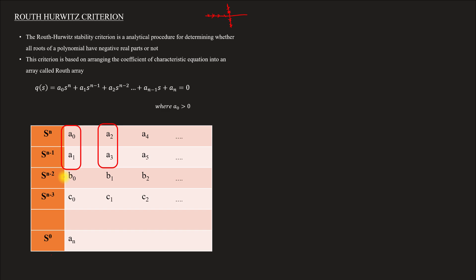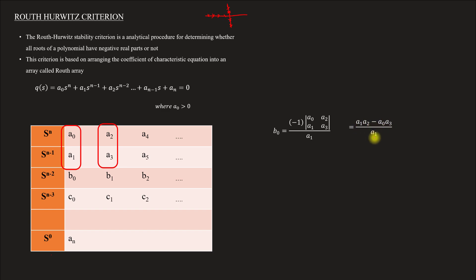The expression for finding B0 is minus of the determinant of the matrix [a0, a2; a1, a3] divided by a1. That is, B0 equals (a1 times a2 minus a0 times a3) divided by a1.